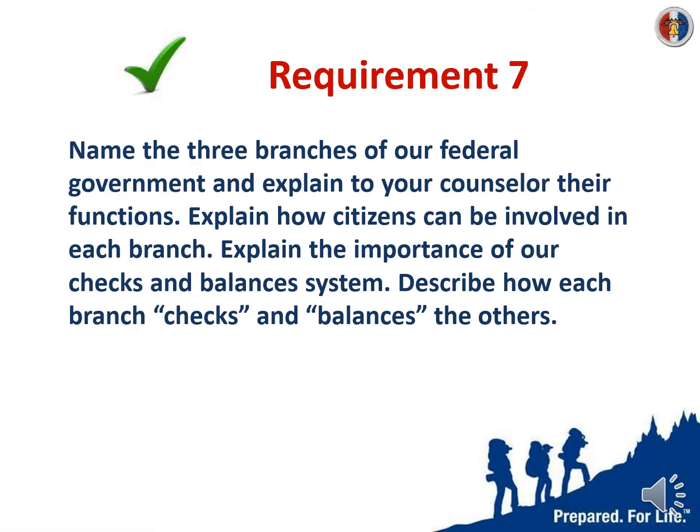In requirement seven, we're going to talk about the branches of the federal government. They're established by the first three articles of the Constitution. We're going to explain why or how the citizens are involved and the checks and balances between each branch of the federal government.